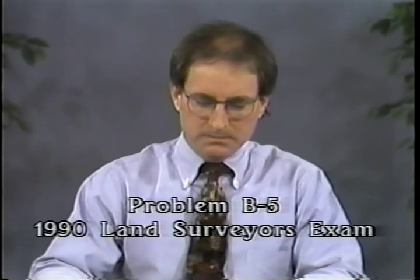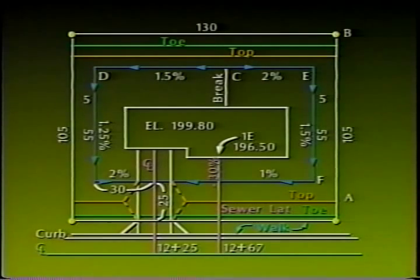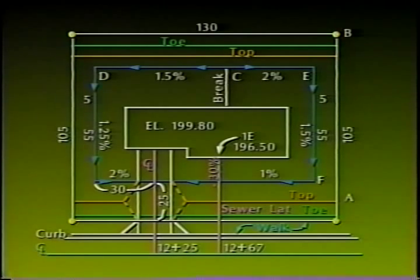Now we're going to discuss problem B5 from the 1990 land surveyors exam. We're provided with information in the form of a street centerline profile, a street section, and a site plan. We're required to answer five questions about the site plan. This site plan problem can be solved using route surveying methodology because it is based on a control line—in this case, the centerline of the street. The first step in the solution is to read and study the whole problem.